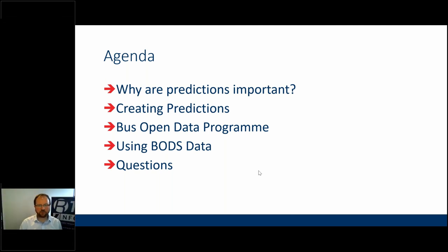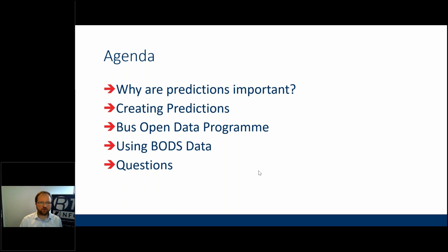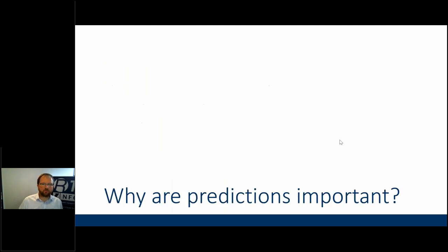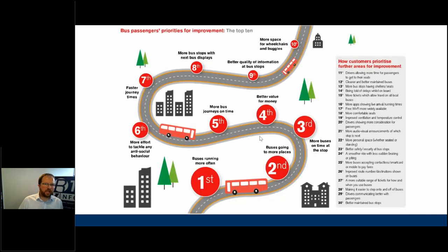We're doing this session today because the Bus Open Data programme has launched. There's now more public transport information — both scheduled and live — than ever before, and it's more easily available. We're seeing an increased interest in how people can use this bus data to provide information to customers. In a recent Transport Focus study from September last year, they identified ten passenger priorities, and a fair few of those involved predictions, either up front to customers or behind the scenes for operations.